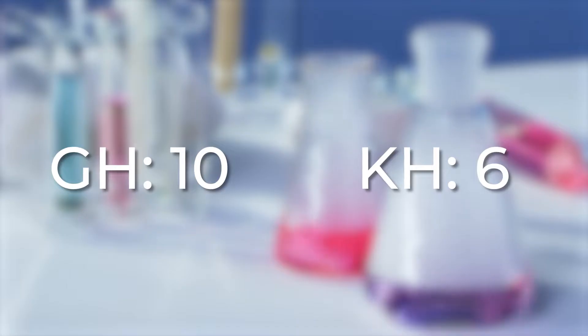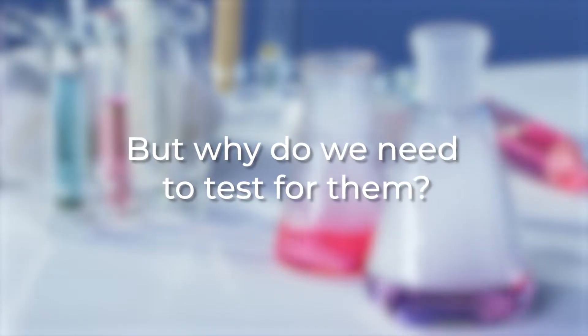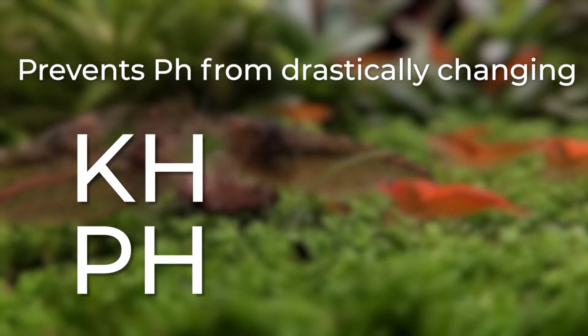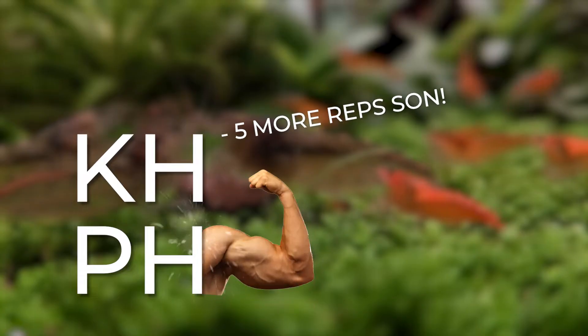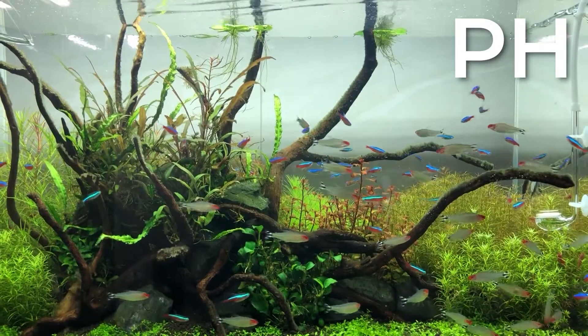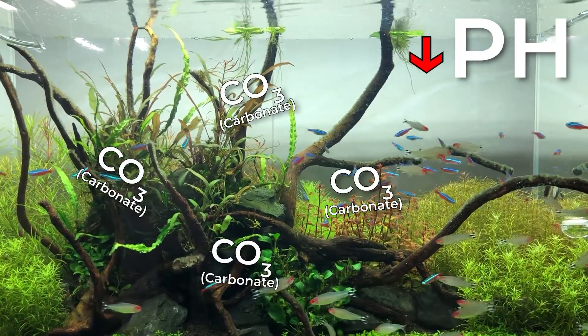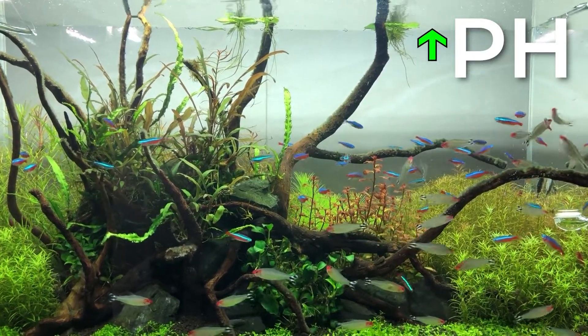Now, we have our GH and KH values, but why do we need to test for them? KH is directly correlated with pH, as it prevents your pH from changing too drastically. In a sense, it buffers your pH. So, let's say your pH starts to drop due to CO2. The carbonate in the water will dissolve, thus neutralizing that pH drop.